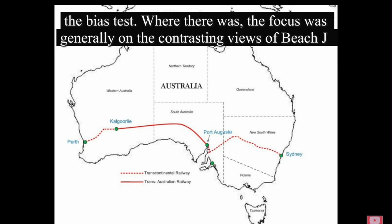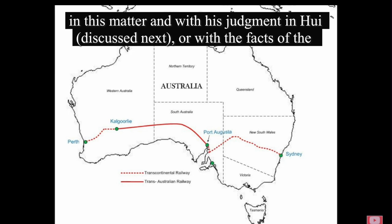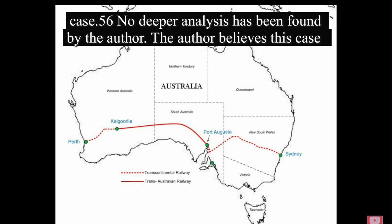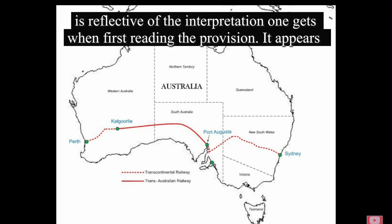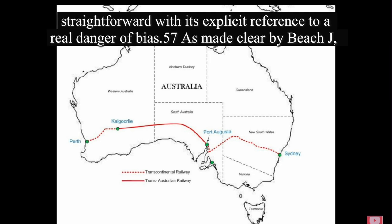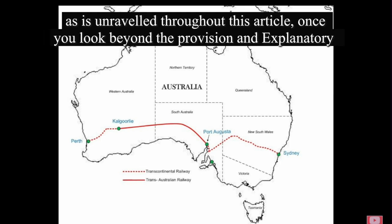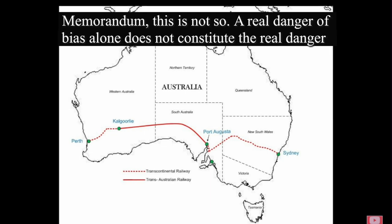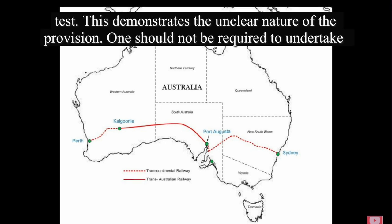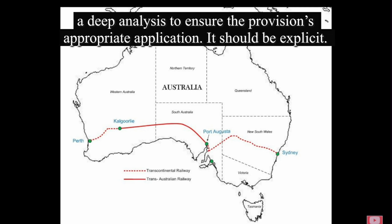The submissions received by the Attorney General recommending the adoption of the Gough test expressly set out both limbs of the Gough test in their advocated provision. As the legislation only expressly reflected the second limb of the Gough test, there was discretion for his Honour to interpret the first limb. Regardless of what was in the explanatory memorandum, it would have made sense to consider the current approach in England given the second limb was explicitly taken from English case law. As such, it was not compulsory that his Honour apply the real danger test, merely the real danger threshold. There was minimal discussion by academics and legal professionals on this case in relation to the bias test. The author believes this case is reflective of the interpretation one gets when first reading the provision — it appears straightforward with its explicit reference to a real danger of bias. However, once you look beyond the provision and explanatory memorandum, a real danger of bias alone does not constitute the real danger test. This demonstrates the unclear nature of the provision; one should not be required to undertake a deep analysis to ensure the provision's appropriate application. It should be explicit.